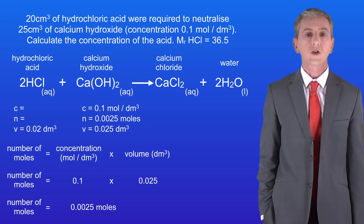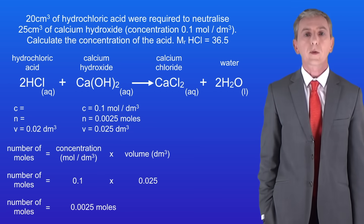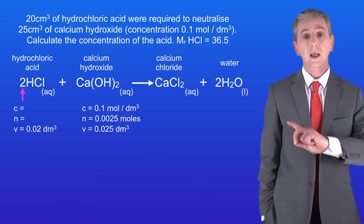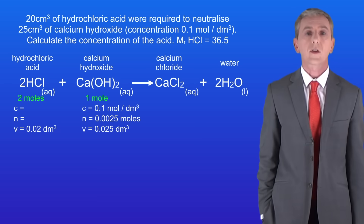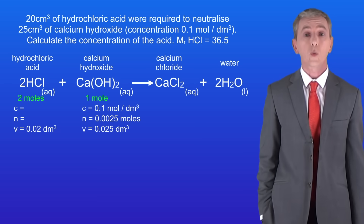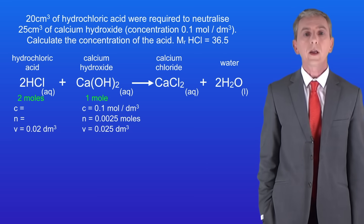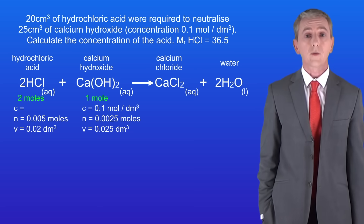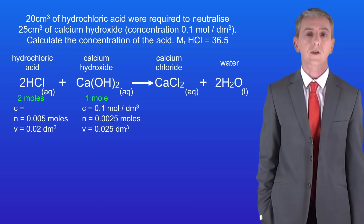Looking at the chemical equation we can see that we've got a large 2 in front of the hydrochloric acid here. This tells us that 2 moles of hydrochloric acid react with every 1 mole of calcium hydroxide. We know that we've got 0.0025 moles of calcium hydroxide, so that means we must also have 0.005 moles of hydrochloric acid.